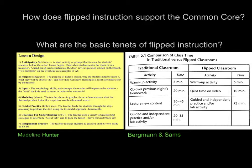Then we move into the real work of teaching and learning: modeling, guided practice, checking for understanding, more formative assessments, and independent practice. Notice that number seven says the teacher releases students to practice on their own based on steps three through six. So number seven is really a response to students' work, and only when they are able to work independently are they released to do so. That's the traditional lesson design.